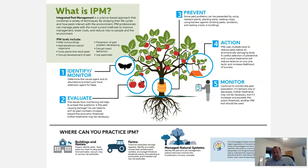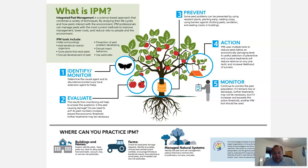Here's an infographic on integrated pest management covering the basic steps: identify the problem, monitor it, evaluate the situation, determine whether the pest is causing damage and whether we need to act, come up with a prevention method, put it into action, and then continually monitor the problem to make sure it's staying in balance.